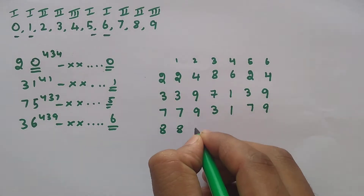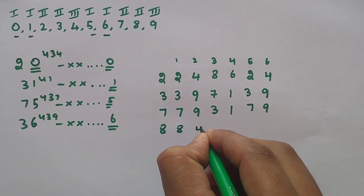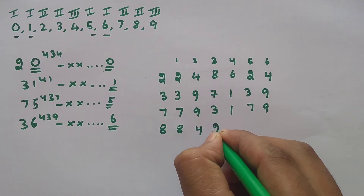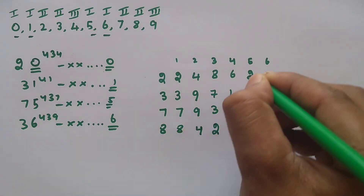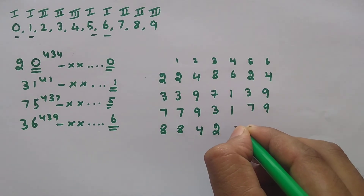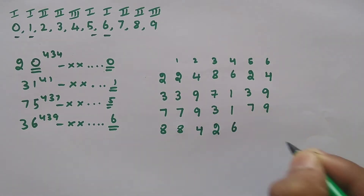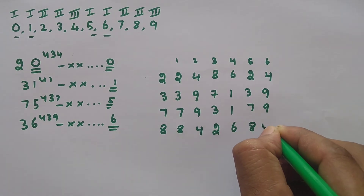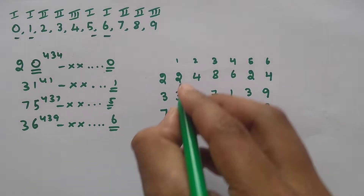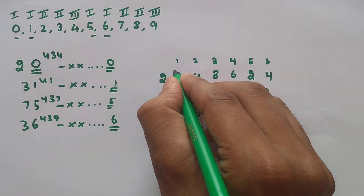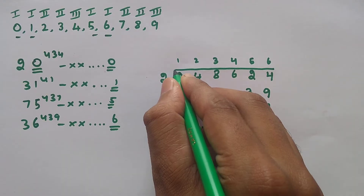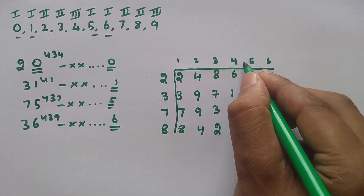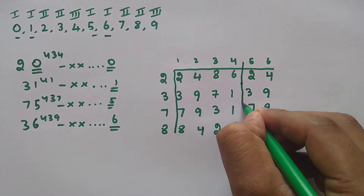For 8: 8 power 1 is 8, 8 squared is 64 so last digit 4, 8 cubed is 512 so last digit 2, and 8 power 4: multiply last digit 2 by 8 to get last digit 6. So the cycle is 8, 4, 2, 6. The cyclicity of numbers 2, 3, 7, and 8 is 4 — the pattern repeats every 4 times.